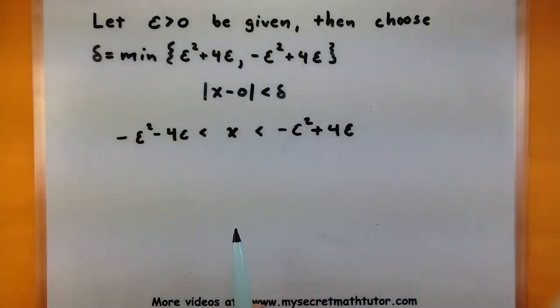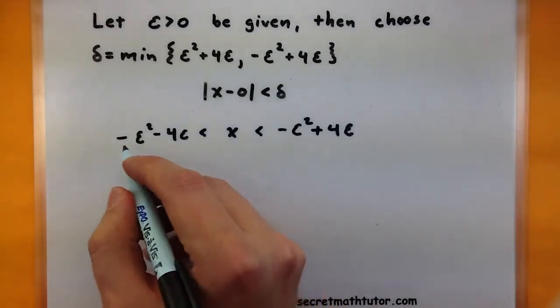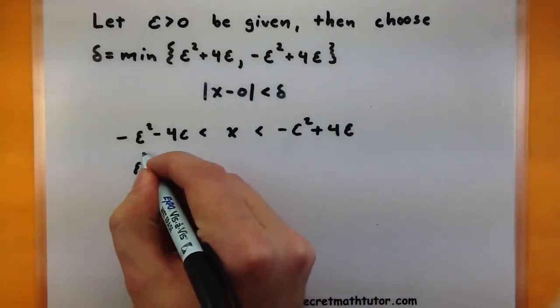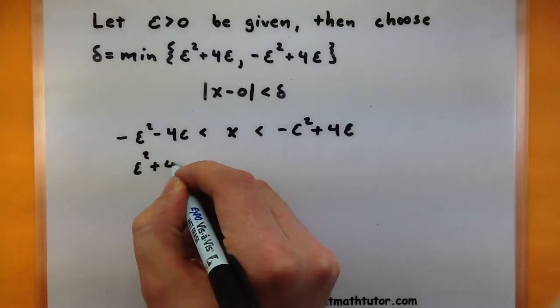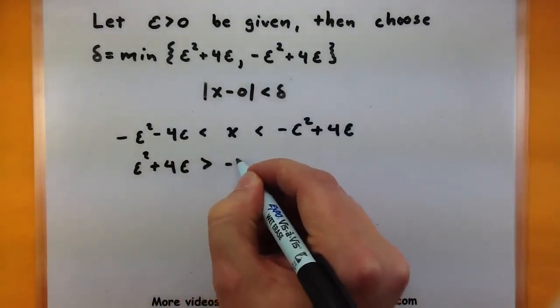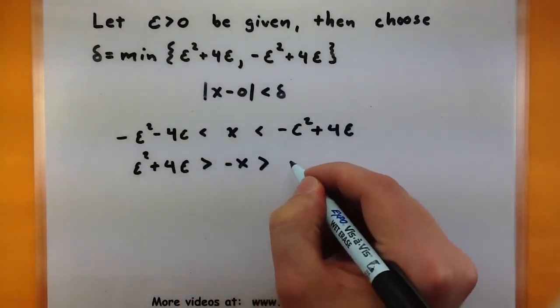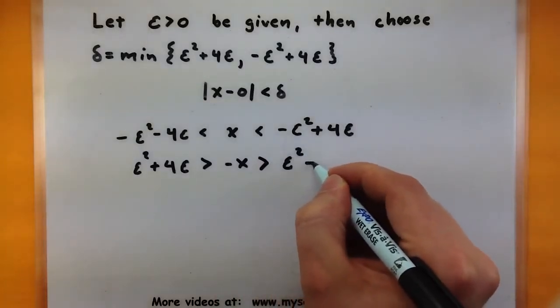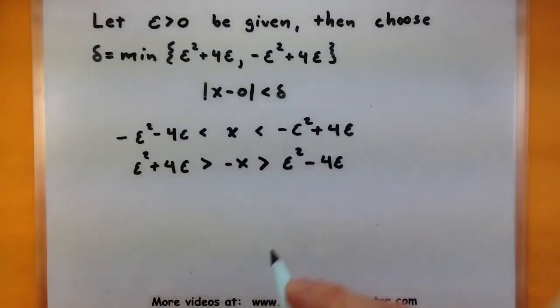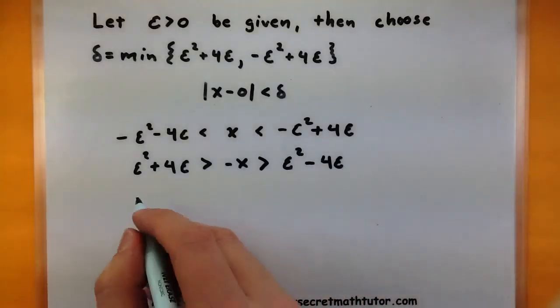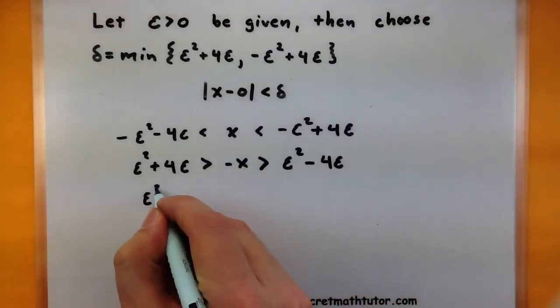So one of the first things I need to do is get a negative x in here, so let's multiply everything through by a negative. Remember that flips our signs. It's good to have our smaller pieces on the left side and our larger ones on the right. So we'll rewrite this.